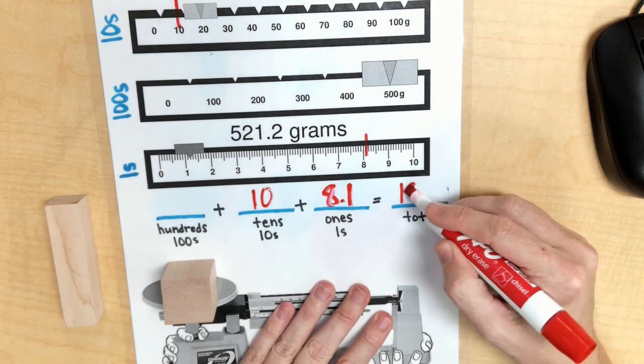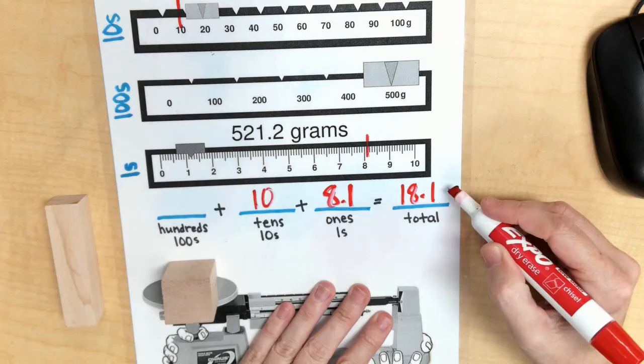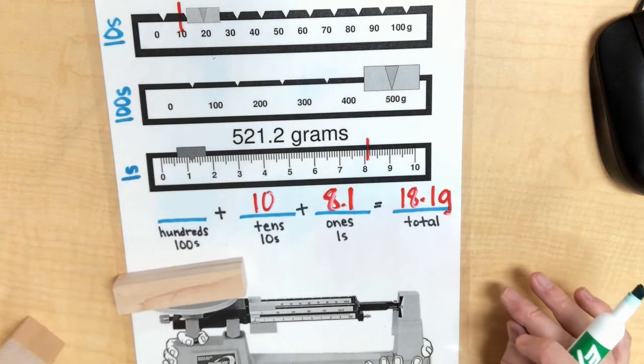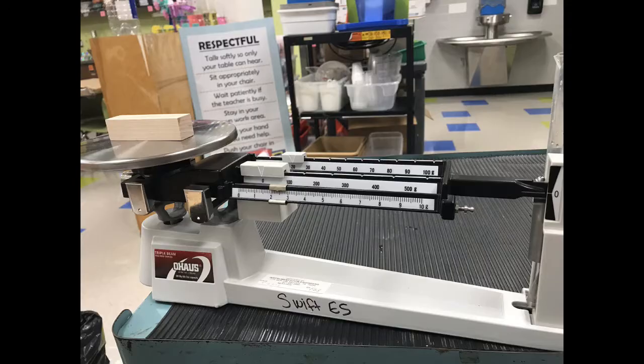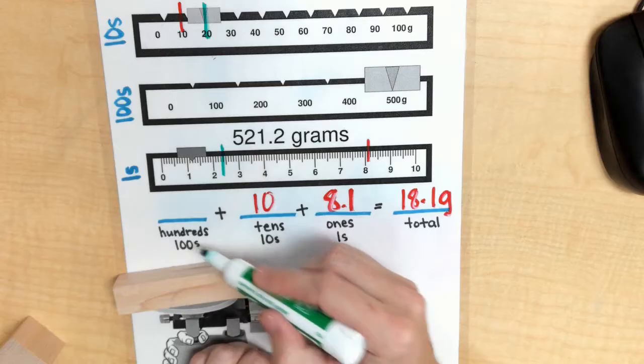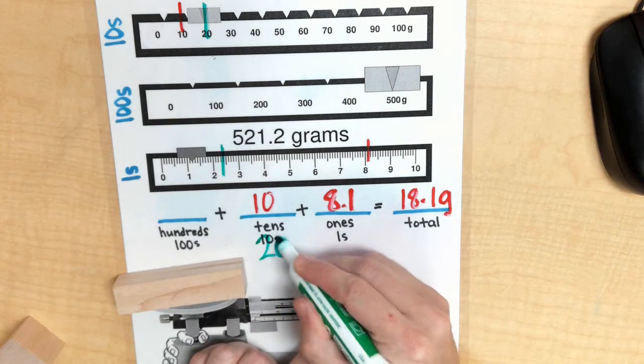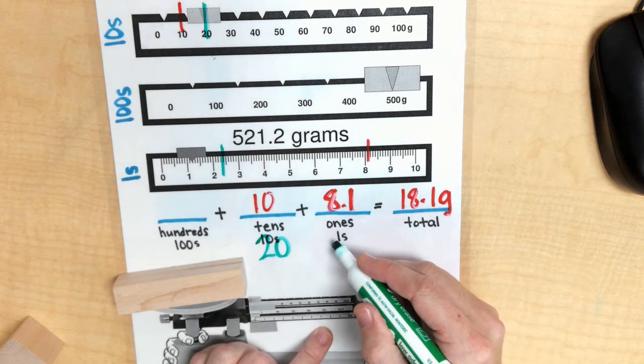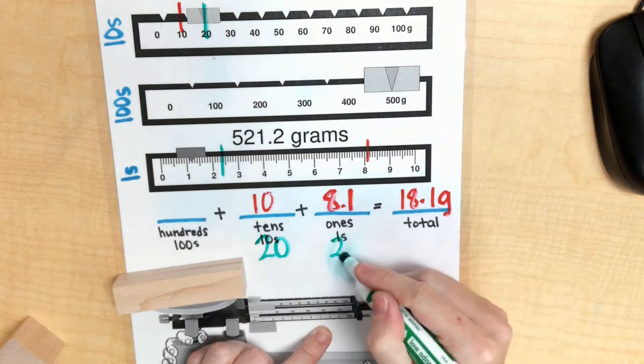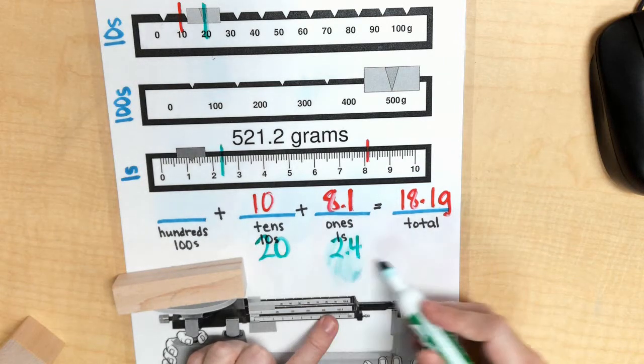Now for my rectangular prism, I placed it on the triple beam balance. And then I read what the measurements were. No hundreds. Twenty. Four. Oops, sorry. Twenty-two point four. Silly Ms. Bell. So that means my total mass was 22 and four tenths grams.